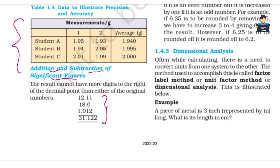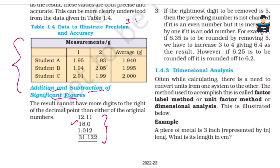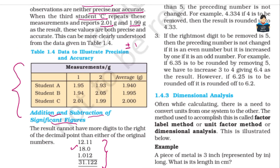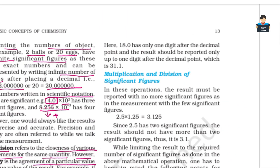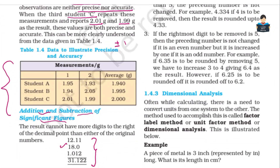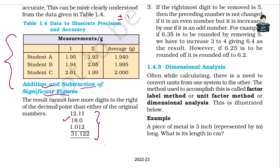Looking at 18.0, which has only one decimal place, the result must be reported to one decimal place. The sum is 31.122, but we represent it as 31.1 because the least precise number has one decimal place.